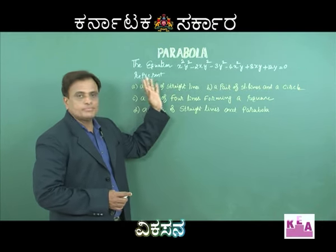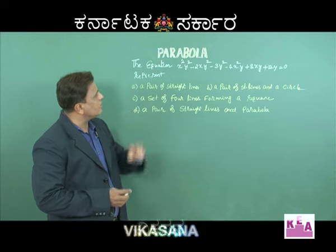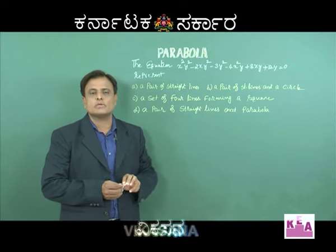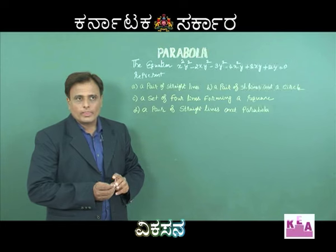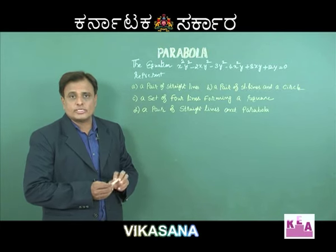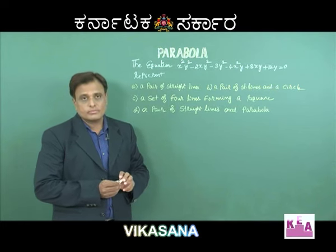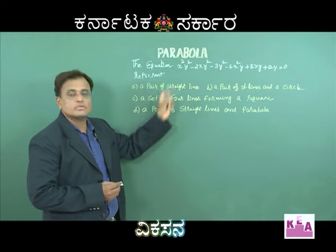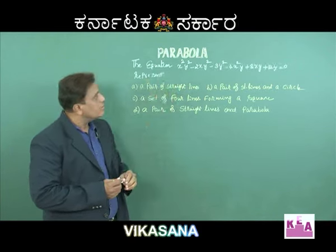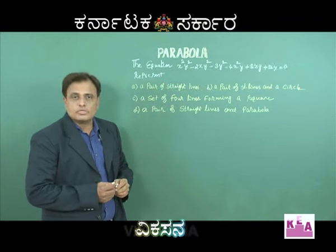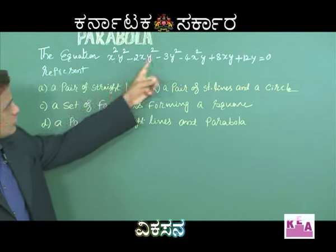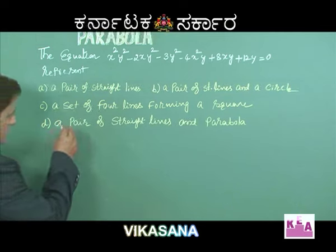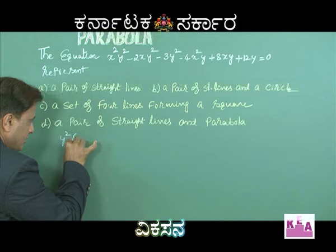Observe the equation — suddenly nobody can guess what it represents. It doesn't look like a circle (general form x² + y² + 2gx + 2fy + c = 0) or a standard pair of lines. Better to work directly on this equation. In the first three terms, y² is a common factor, so we take y² out: y²(x² - 2x - 3).